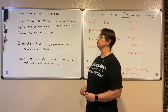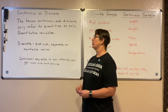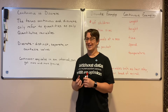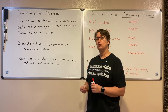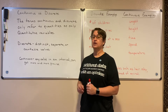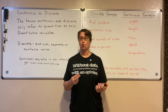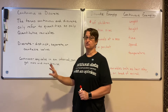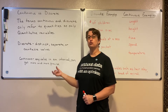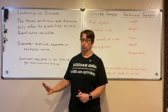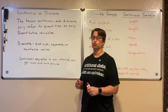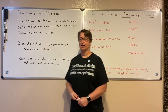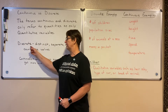With continuous and discrete, those two terms only deal with quantities — we're dealing with measurements or counts, so they only refer to quantitative variables. In our previous video, we looked at quantitative and qualitative variables. All of our qualitative variables will be neither continuous nor discrete, because these two terms don't deal with those qualities or categories — they only refer to quantities.